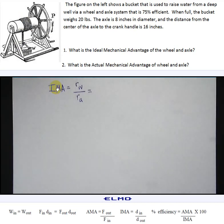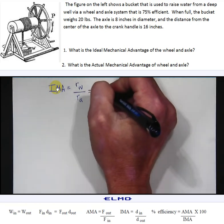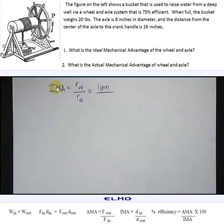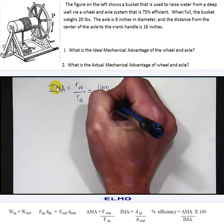The radius of the wheel is the distance from the center of the axle out to the crank handle which is given as 16 inches. The radius of the axle is not given but the diameter is said to be 8 inches, therefore the radius will be 4 inches.